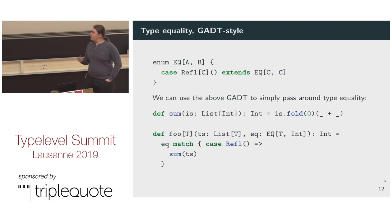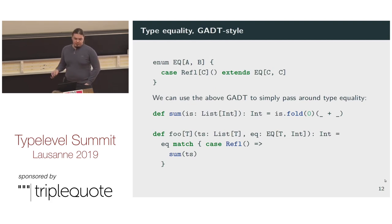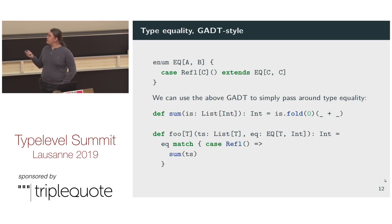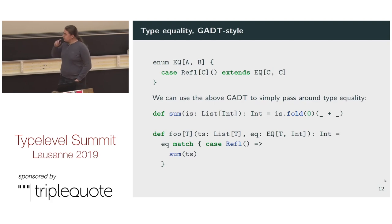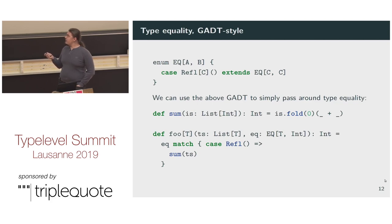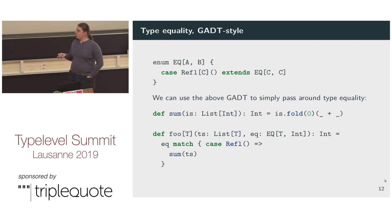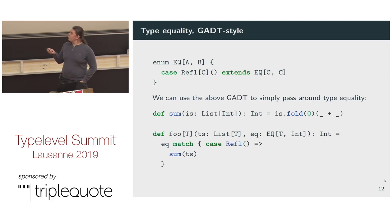Maybe the most fundamental example of a GADT is EQ. EQ is essentially evidence that two types are equal to one another — it's defined using a trick where a single case accepts one type parameter and passes it to both type parameters. We can use it like a better equals. Here we define a sum function that takes a List of Int. We have a function that takes a List of T, takes evidence that T equals Int, matches on EQ, and then sums the thing. We cannot do this easily with =:= without extending it. Instead of mapping over T's at runtime, we use the type system to just pass the list to our sum function.